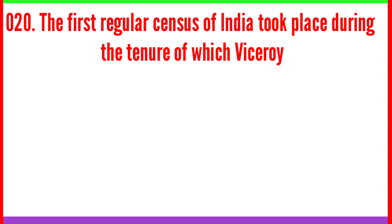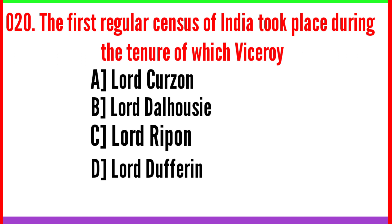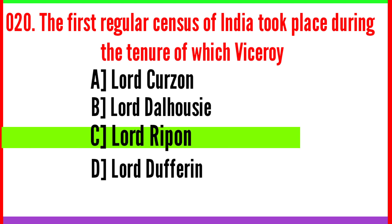Question number twenty: The first regular census of India took place during the tenure of which Viceroy? Option C: Lord Ripon. Correct answer.